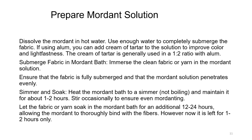To prepare the mordant solution, dissolve the desired amount of mordant in hot water, using enough water to completely submerge the fabric. If using alum, add cream of tartar in a ratio of 1 to 2 with alum to improve color and light fastness. Immerse the clean fabric or yarn in the mordant solution, ensuring it is fully submerged so the mordant penetrates evenly. Heat the mordant bath to simmering — not boiling — and maintain for about 1 to 2 hours, stirring occasionally to ensure even mordanting. Currently, soaking is done for 1 to 2 hours, allowing the mordant to thoroughly bind to the fabric.